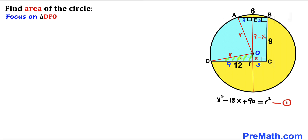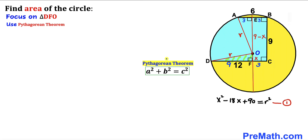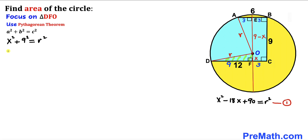Now let's focus on the other right triangle DFO, whose side lengths are x, 9, and r. Applying the Pythagorean theorem: x² + 9² = r², which simplifies to x² + 81 = r². Let's call this Equation 2.